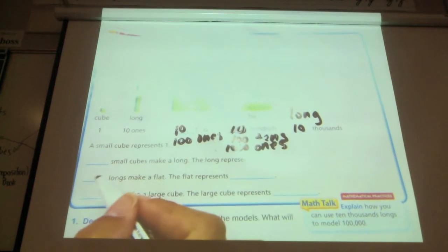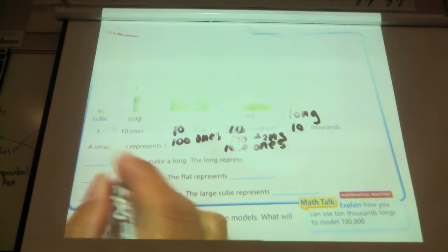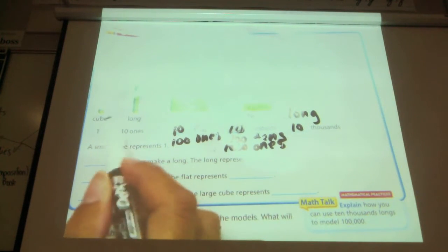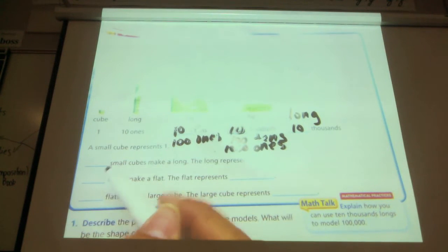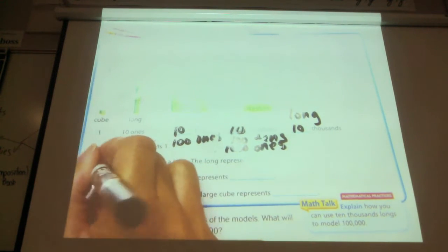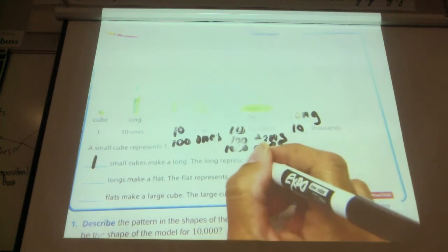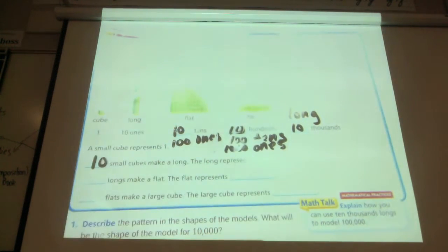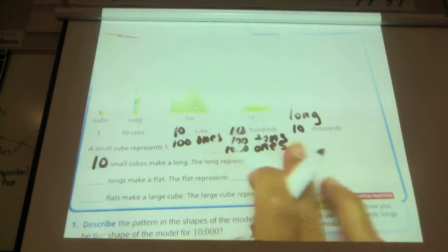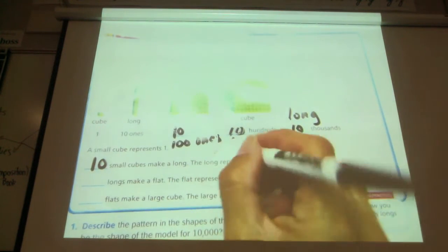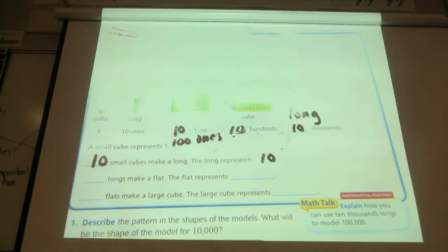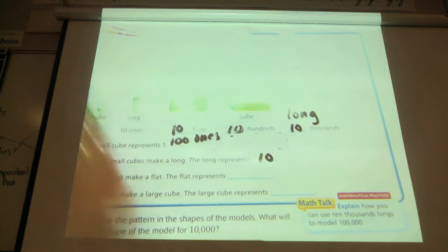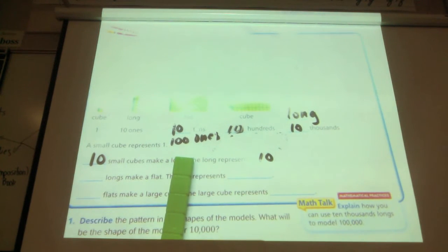We're going to go back here. How many small cubes — that's those — make a long? One small cube... ten small cubes make a long, and that represents what number? Ten. It represents ten. This long right here represents ten.